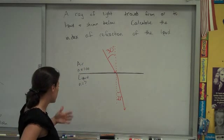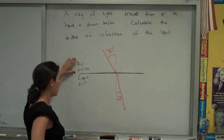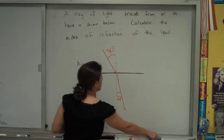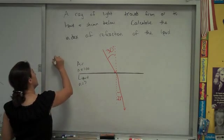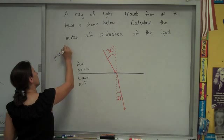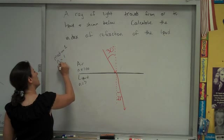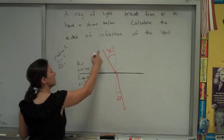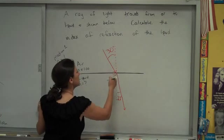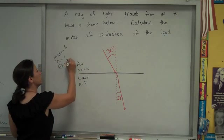In terms of givens, let's call this medium 1 and this medium 2. So for medium 1, we know that n is 1, and the angle of incidence is measured from the incident light to the normal line is 30 degrees.